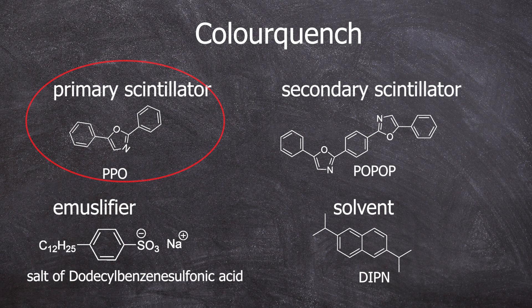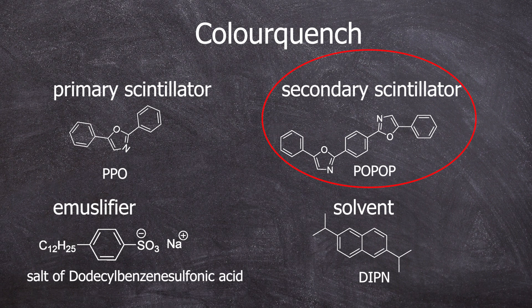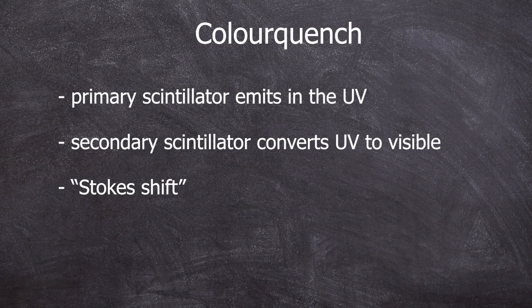And then there is the color quench. I mentioned a few minutes ago that the scintillator emits in the UV range. That's bad if the photomultiplier has an absorption maximum in the visible range. Therefore, there is a secondary scintillator in the cocktail. The secondary scintillator or wavelength shifter ensures that the photons emitted by the primary scintillator fall within the correct wavelength range for the photomultiplier. Stokes shift is the technical term for this.